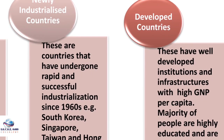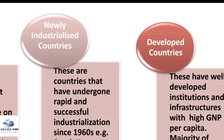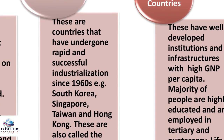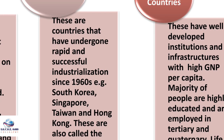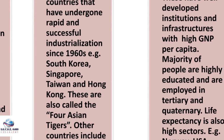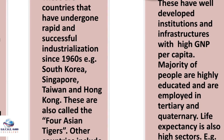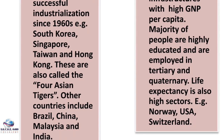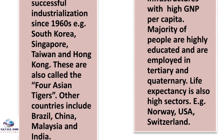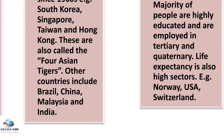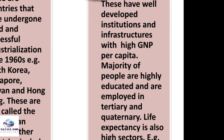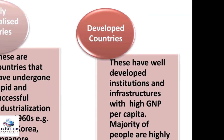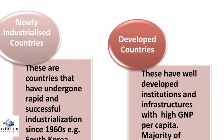In stage three we have newly industrialized countries — countries that have undergone rapid and successful industrialization since the 1960s. Examples include South Korea, Singapore, Taiwan, and Hong Kong, which together are known as the Four Asian Tigers. Other examples include Brazil, China, Malaysia, and India. In stage four — developed countries — these nations have well-developed institutions and infrastructure with high GDP per capita.